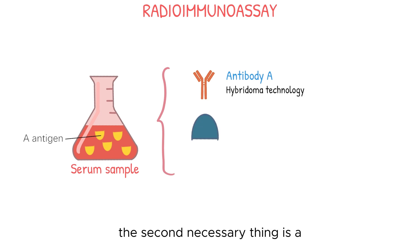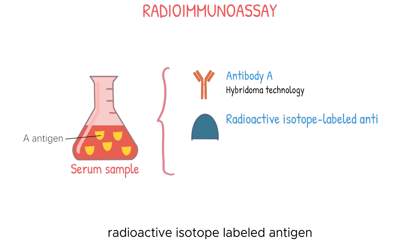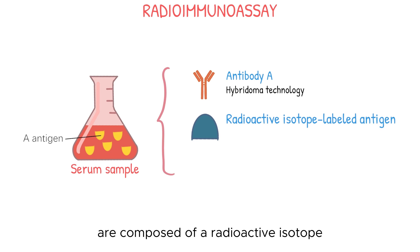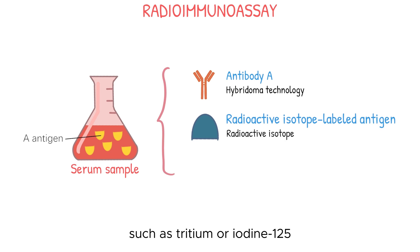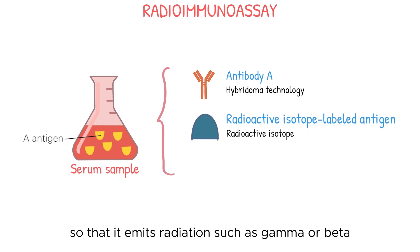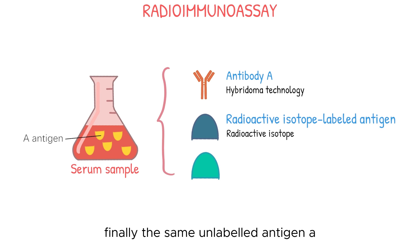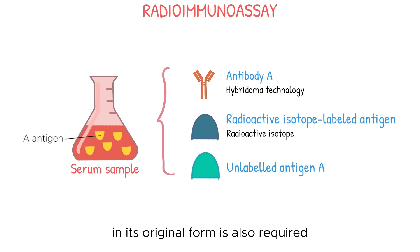The second necessary thing is a radioactive isotope labeled antigen, where some parts of antigen A are composed of a radioactive isotope such as tritium or iodine-125, so that it emits radiation such as gamma or beta. Finally, the same unlabeled antigen A in its original form is also required.